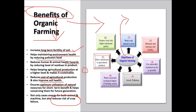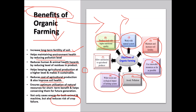Now talking about the objectives of organic farming — there are seven major points. One: to produce food with high nutritional quality. Two: to work with natural systems to maintain sustainability of resources. Three: to improve and increase soil fertility. Four: to enhance renewable resources. Five: to avoid pollution. Six: to lessen ecological impact. Seven: to provide satisfaction to both the producer and the produce — which is also a very important objective.